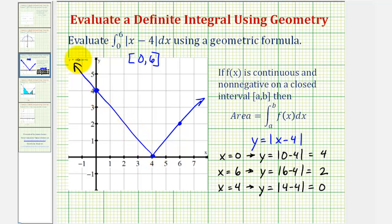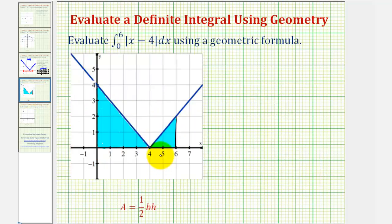But remember, our goal is only to find the area under the function and above the x-axis on the interval from zero to six. So we're going to start here and stop here. So if we shade the area under the function on this interval, it would look like this.